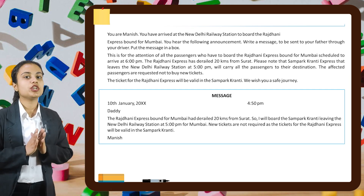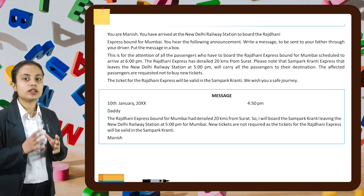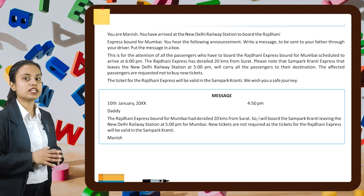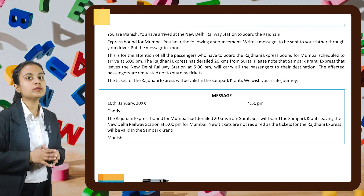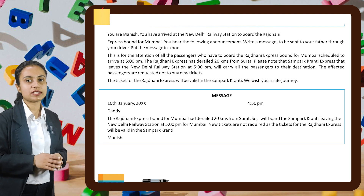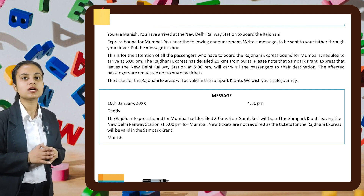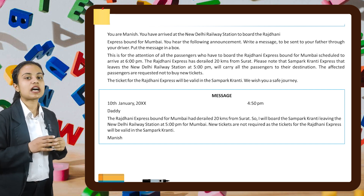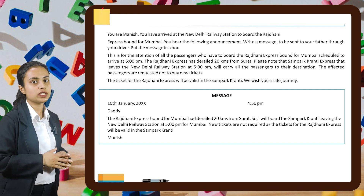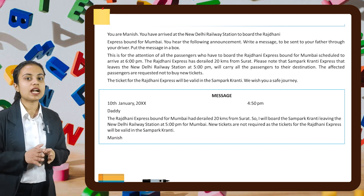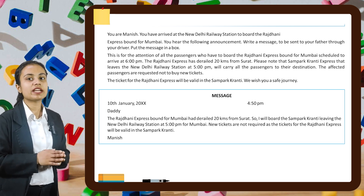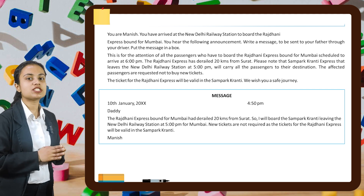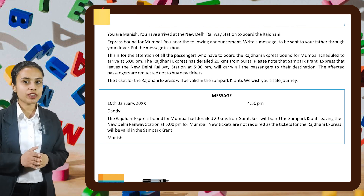Let's see one more example. You are Manish. You have arrived at the New Delhi railway station to board the Rajdhani Express bound for Mumbai. You hear the following announcement: 'This is for the attention of all passengers boarding the Rajdhani Express bound for Mumbai, scheduled to arrive at 6pm. The Rajdhani Express has derailed 20 kilometres from Surat. The Sampark Kranti Express, leaving New Delhi railway station at 5pm, will carry all passengers to their destination. Affected passengers need not buy new tickets, as Rajdhani Express tickets will be valid on the Sampark Kranti. We wish you a safe journey.'